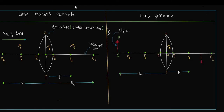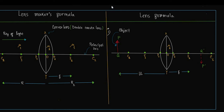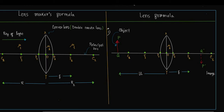Now we can compare the Lensmakers Formula with the Lens Formula. In this case, we assume that PQ is an object and P'Q' is the real image formed by a convex lens.